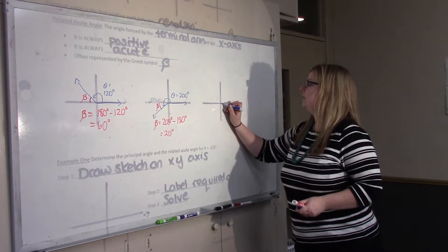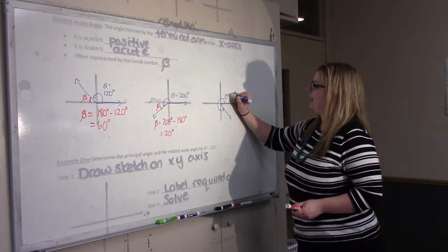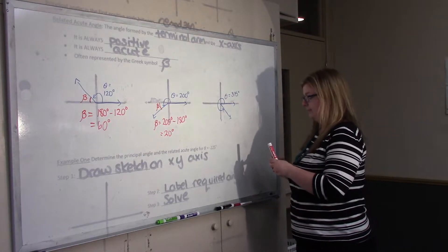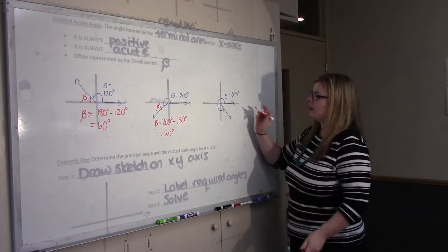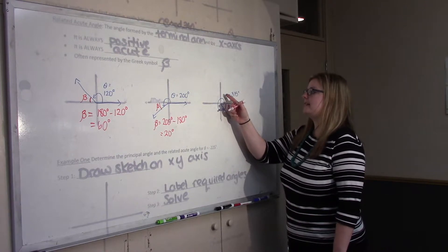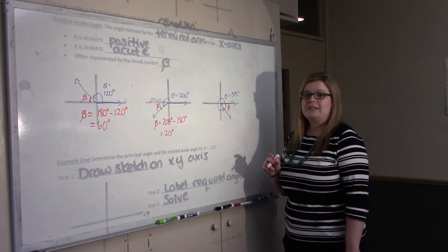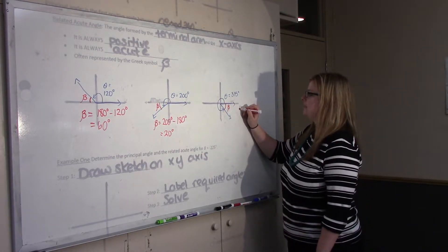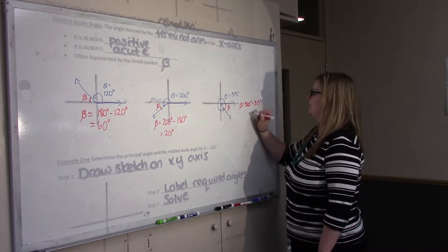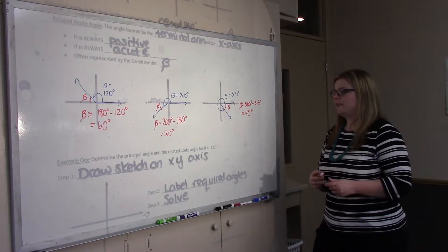What if we have an angle that terminates in the fourth quadrant? Here we might have theta equals 315 degrees. It's between the terminal arm and the x-axis, so beta is here. We can find beta because the entire way around the circle would be 360, but we've taken out 315 degrees, so beta equals 360 degrees minus 315 degrees, leaving 45 degrees.